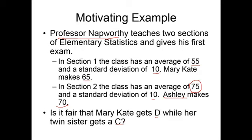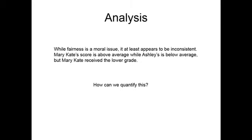Think about that. One has made above average and is getting a D, while the one that has made below average is getting a C. Fairness is a moral issue, but this appears to be inconsistent. Mary Kate's score is above average while Ashley's is below average. How can we quantify this?